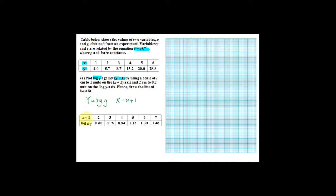This is the table you have to construct. The first row is x plus 1 — very simple to calculate: when x is 1, x plus 1 is 2; when x is 2, x plus 1 is 3; when x is 3, x plus 1 is 4. For log base 10 of y: when y equals 4, log 10 of 4 gives 0.6. When y equals 5.7, log 10 of 5.7 gives 0.76. Use the same concept to find all values of log 10 y.